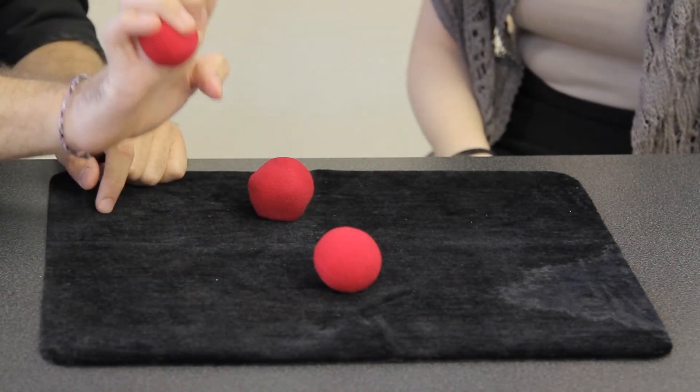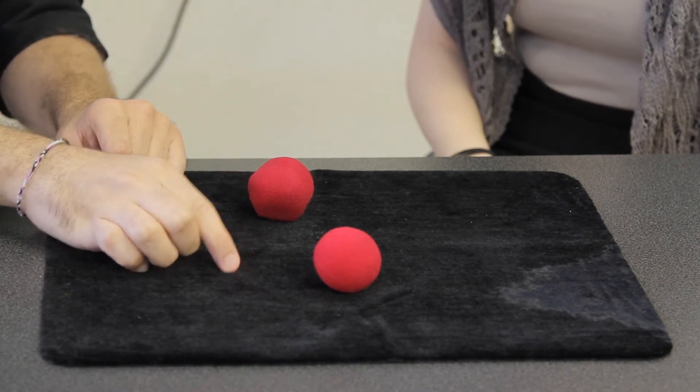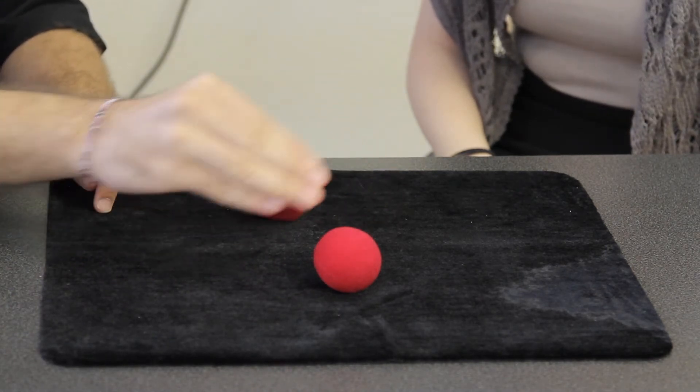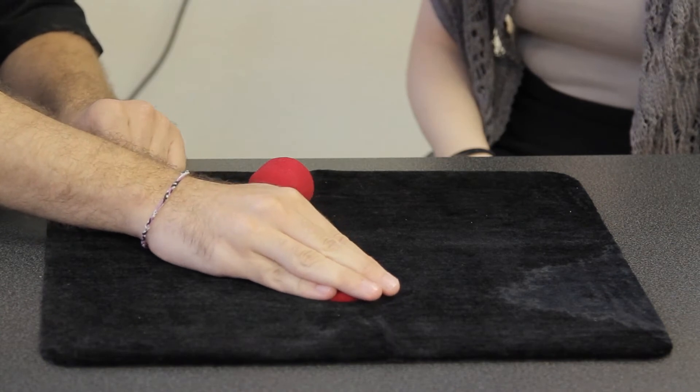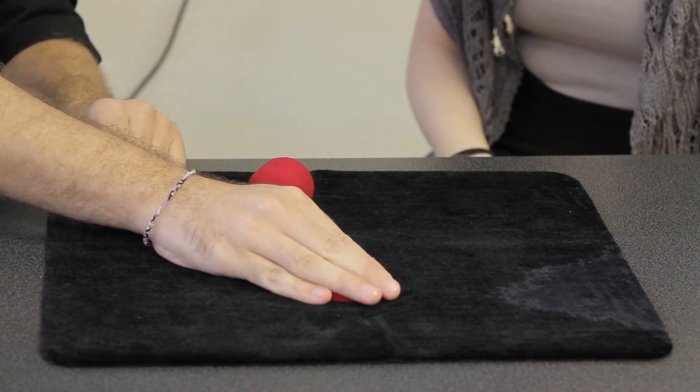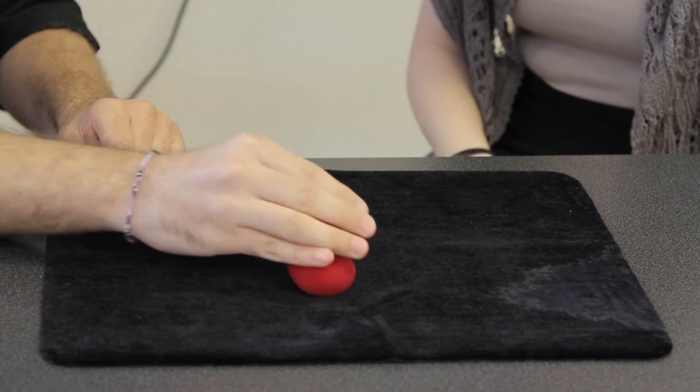So we have our hidden sponge ball right here and we're going to pick up the other one. You can even just place the sponge ball right on top. Quick motion. They'll never know that it's two.